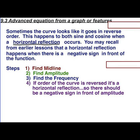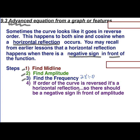To get a horizontal reflection, there is a negative sign out in front of the function itself, so we need to watch out for that. This lesson is about a few advanced features from our previous lesson. We still need to find the midline, the amplitude, and the frequency — remember, frequency is two pi divided by the period. The last thing is if the order of the curve is reversed, using our mnemonic devices: HOHOLO for sine and CHOLO for cosine.